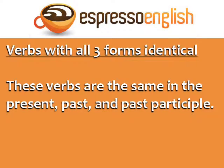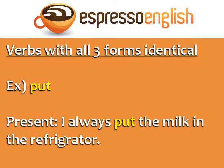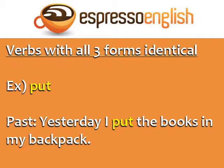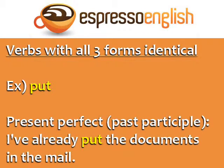The first group is irregular verbs with all three forms identical. These verbs are the same in the present, past, and past participle. One example is 'put.' Present: I always put the milk in the refrigerator. Past: Yesterday I put the books in my backpack. The present perfect uses the past participle form: I've already put the documents in the mail.